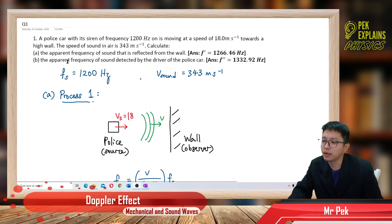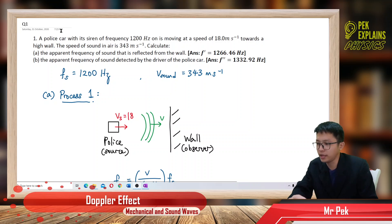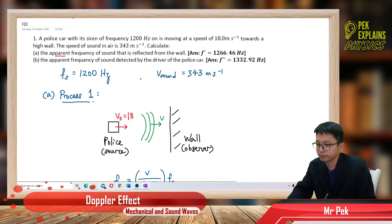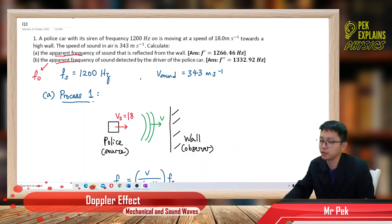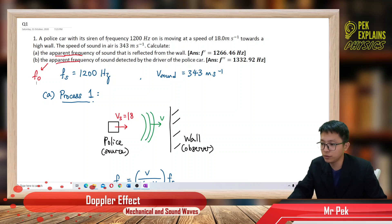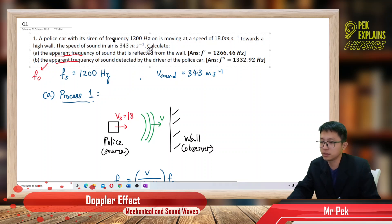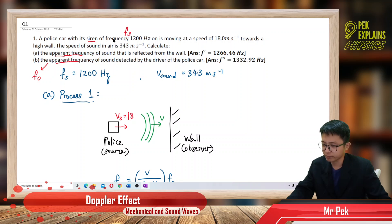Calculate the apparent frequency of sound that is reflected from the wall. The apparent frequency is the observed frequency. The source frequency — the siren frequency — is already given as FS, the actual frequency.